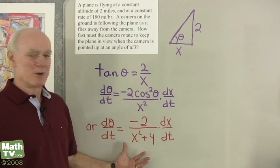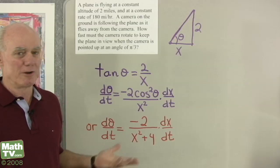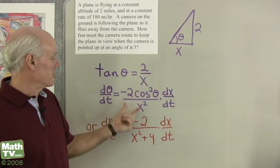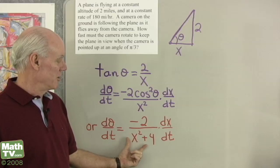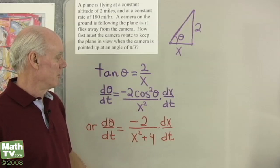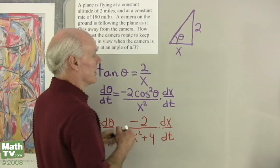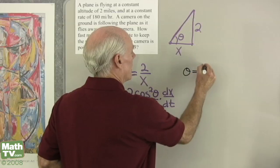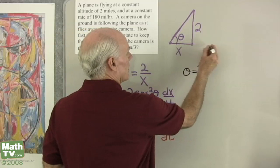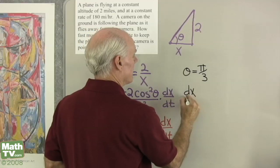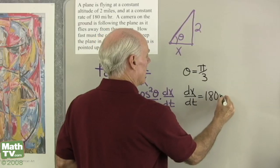Here's the summary of the formulas derived: tangent theta equals 2 over x, or theta equals inverse tangent of 2 over x. Differentiating the first and solving for d theta dt gives one formula; differentiating the inverse tangent form gives the other. Both are valid. I want to find d theta dt when theta equals pi over 3. I know dx dt is the speed of the plane, which is 180 miles per hour.